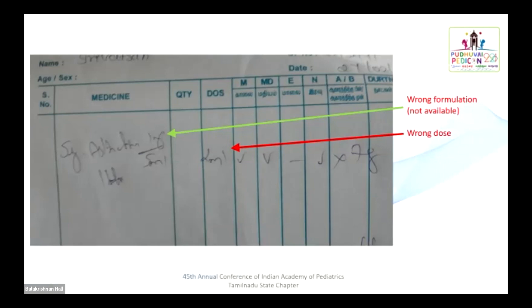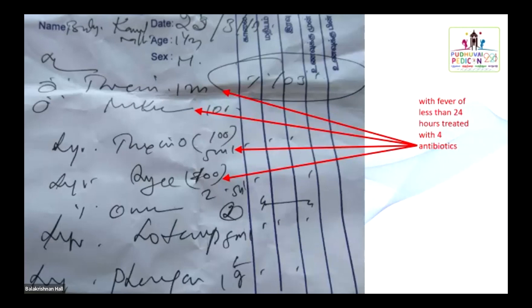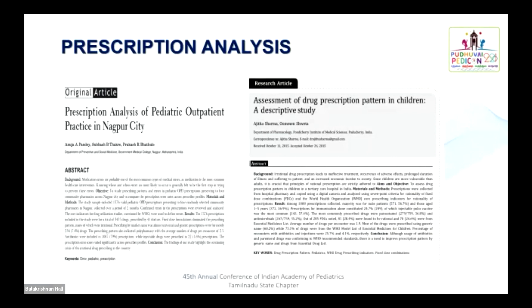In this prescription example, the strength mentioned is one milligram but it is actually two milligrams — because of this error, the dosage automatically becomes wrong. Another irrational prescription consists of four antibiotics for a child having only 24 hours of fever. Even if the temperature is 103°F, writing four antibiotics for a single day of fever is totally irrational. This is why studies are being conducted regarding prescription analysis.